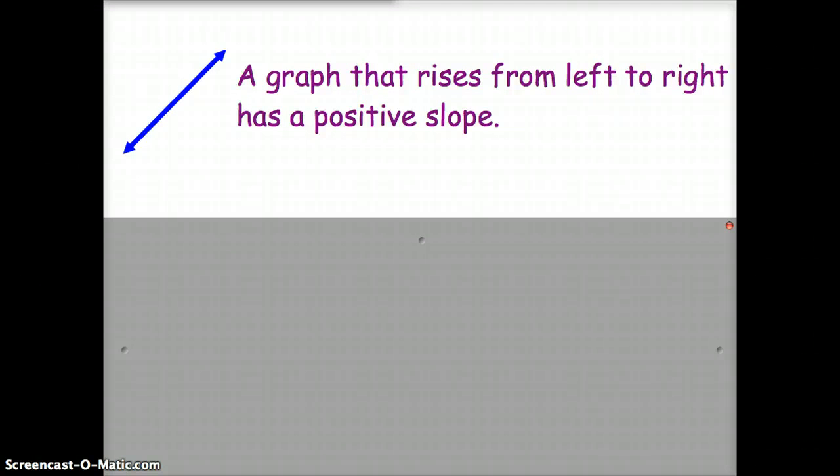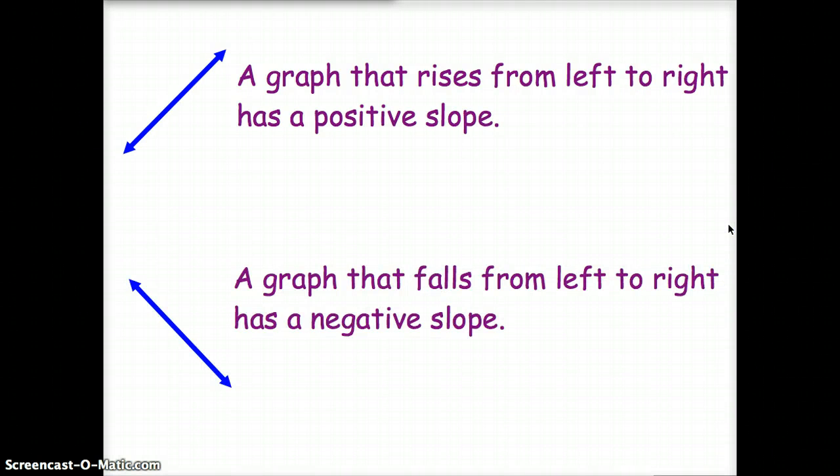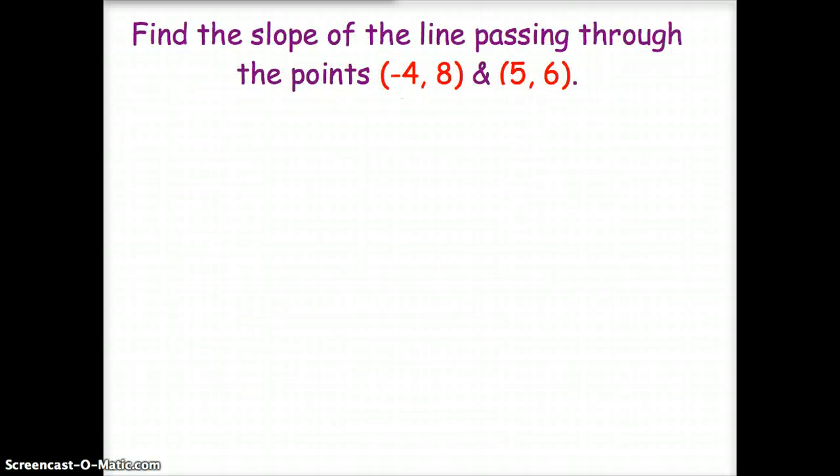Some other pertinent information, a graph that rises from left to right has a positive slope. Conversely, a graph that falls from left to right has a negative slope. Example 1, find the slope of the line passing through the ordered pairs negative 4, 8 and 5, 6. Well, looking at these two ordered pairs, we have two x comma y values.